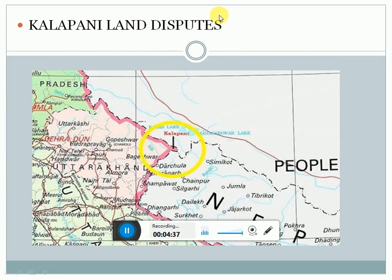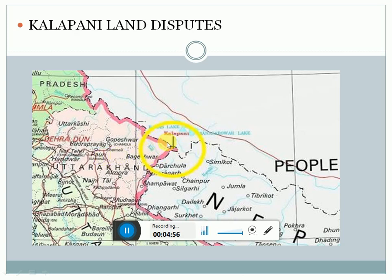There is one major dispute between India and Nepal which can only be resolved with the help of bilateral talks, and that is the Kalapani land dispute. This particular area, Kalapani, is near Pithoragarh in Uttarakhand, with a total area of around 35 km², and this has been a major dispute between India and Nepal.